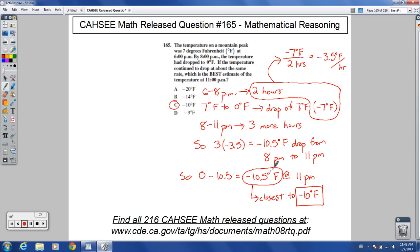Okay, so that is closest. This is our final answer, negative 10 degrees Fahrenheit. Choice C for 165.